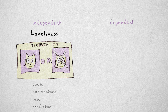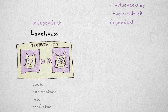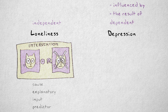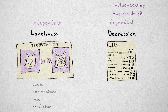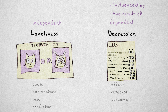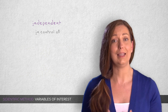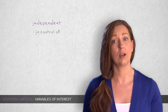The dependent variable is hypothesized to be influenced by the cause variable, or to be the result of another variable. Its values depend on another variable. In our example, the dependent variable was depression, as measured through scores on the GDS questionnaire. The dependent variable is also referred to as effect variable, response variable, outcome, or output variable. If you're having trouble telling the terms independent and dependent apart, try to remember that the independent variable is what the researcher would like to be in control of — it's the cause that comes first.